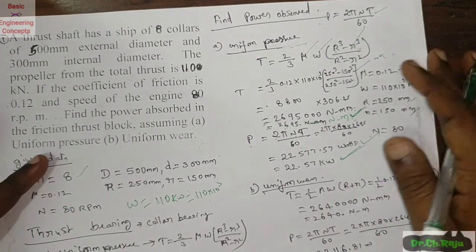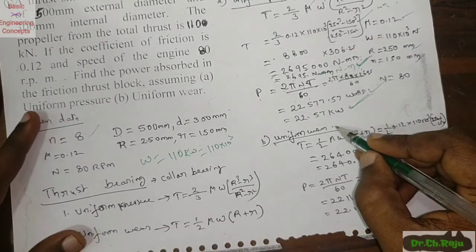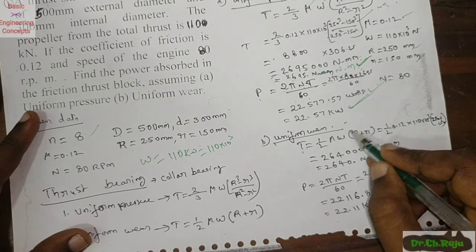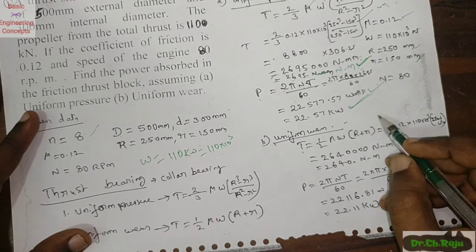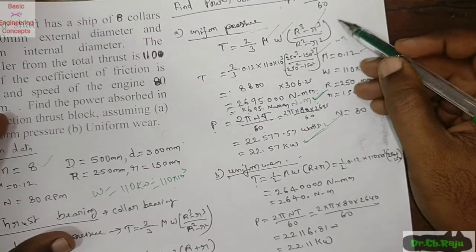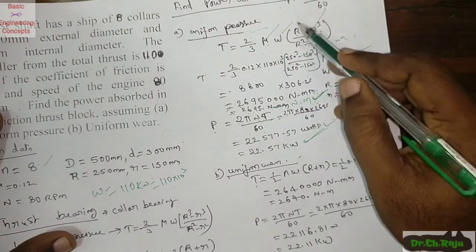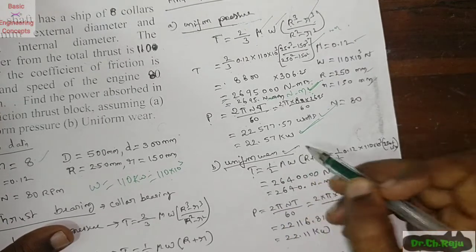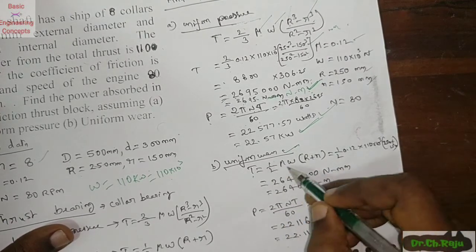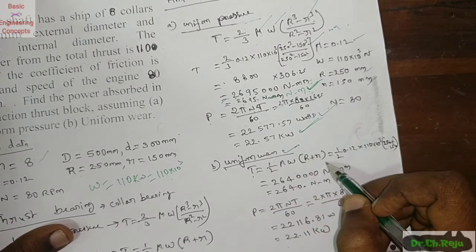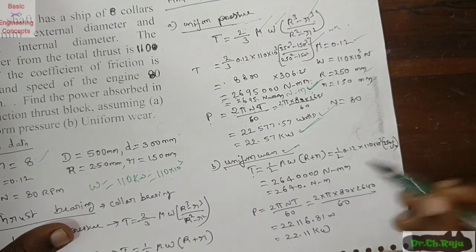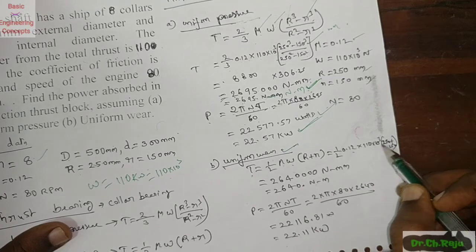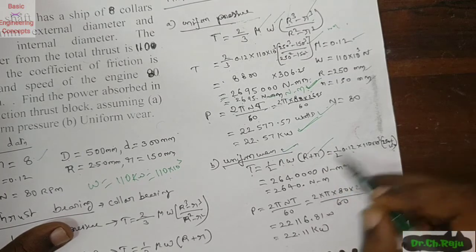Next, for uniform wear consideration, the torque formula is T = (1/2) × μ × W × (R + r). The difference from the previous formula is notable: for uniform pressure it was (2/3) × μ × W × (R³ − r³)/(R² − r²). For uniform wear, with μ = 0.12, W = 110 × 10³ N, R = 250 mm, and r = 150 mm.